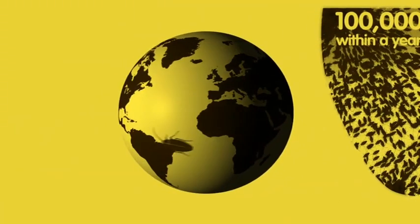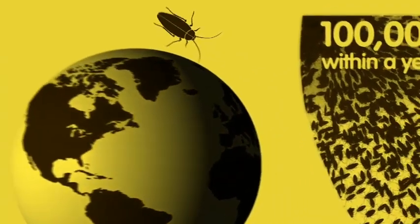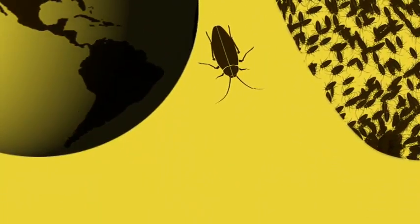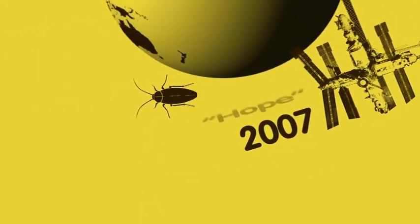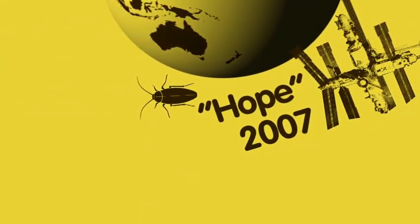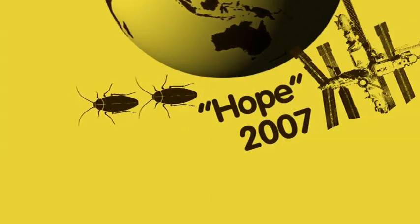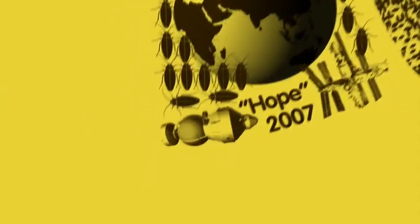Wherever humans are, roaches will follow, even in outer space. There are rumours of roach sightings on the Mir space station, and in 2007, a Russian roach called Hope was the first land animal to conceive and give birth in space, producing 33 offspring on board a photon spacecraft.